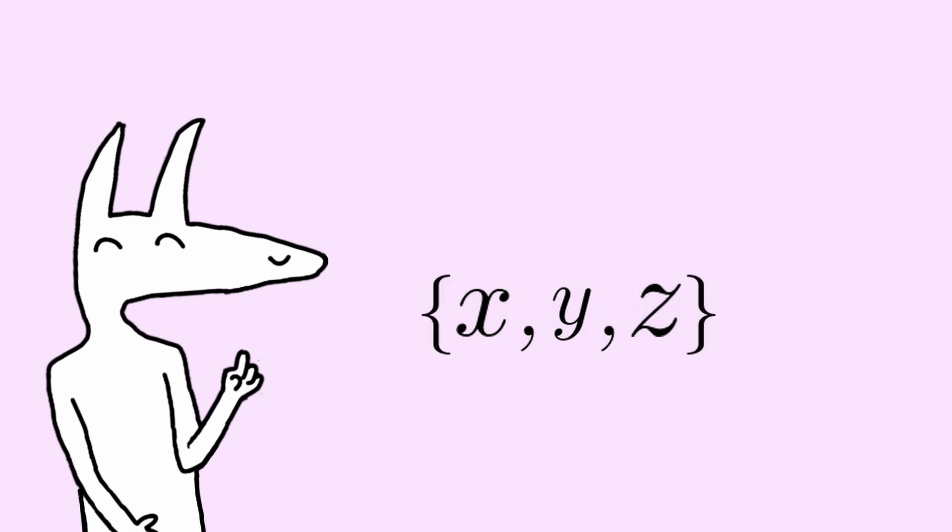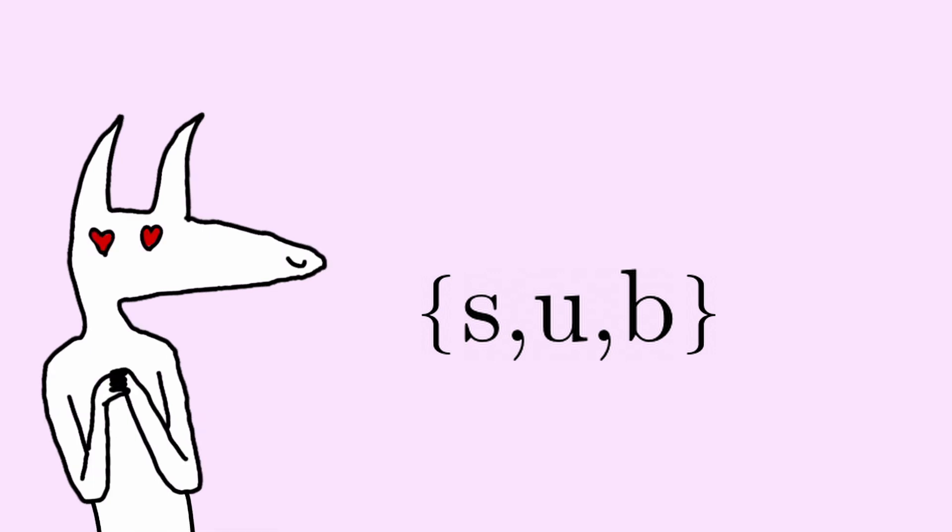So, for example, if I write this down, you will know that I am talking about a set which consists of the numbers 2, 3, and 5. And if I write this down, you will know that I am talking about the set which consists of the letters s, u, and b. Subscribe, by the way.